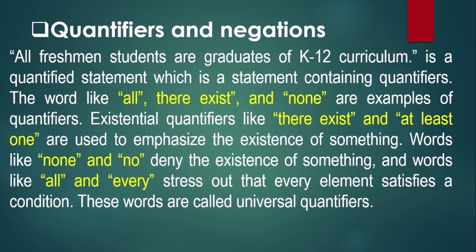Now let's proceed with quantifiers and negations. All freshman students are graduates of K-12 curriculum is a quantified statement — a statement containing quantifiers. The quantifier used is 'all.' Words like all, there exists, and none are examples of quantifiers. Existential quantifiers like 'there exists' and 'at least one' emphasize the existence of something. Words like 'none' and 'no' deny existence, while words like 'all' and 'every' are called universal quantifiers and stress that every element satisfies a condition.